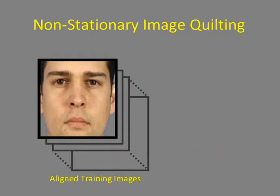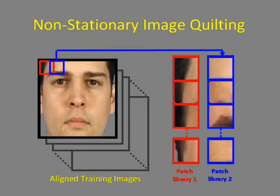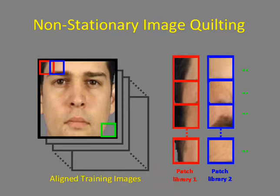For training, we take a large number of real faces and align them. We take all of the patches from the top left corner of the faces and store them in a library. Then we consider the overlapping neighboring region and store all the patches from here in a different library. We continue until we have a separate library for each patch position.